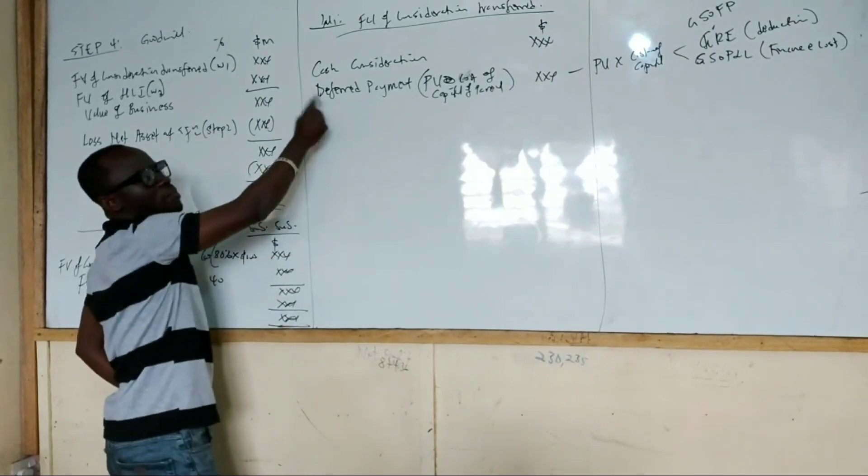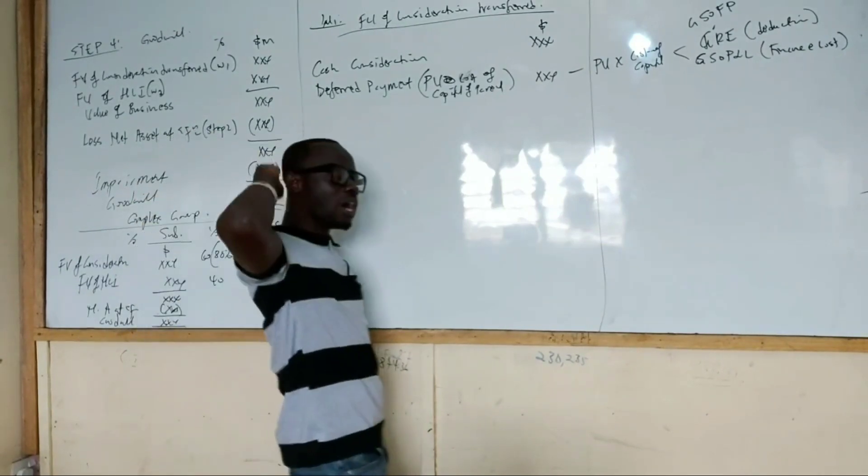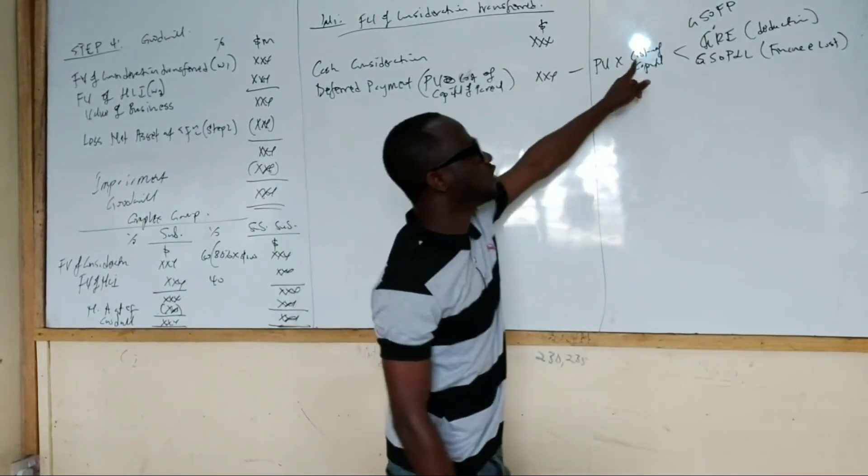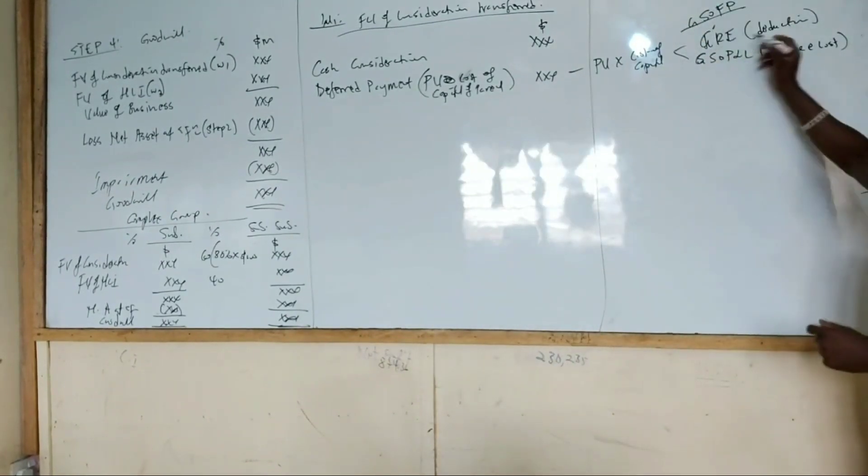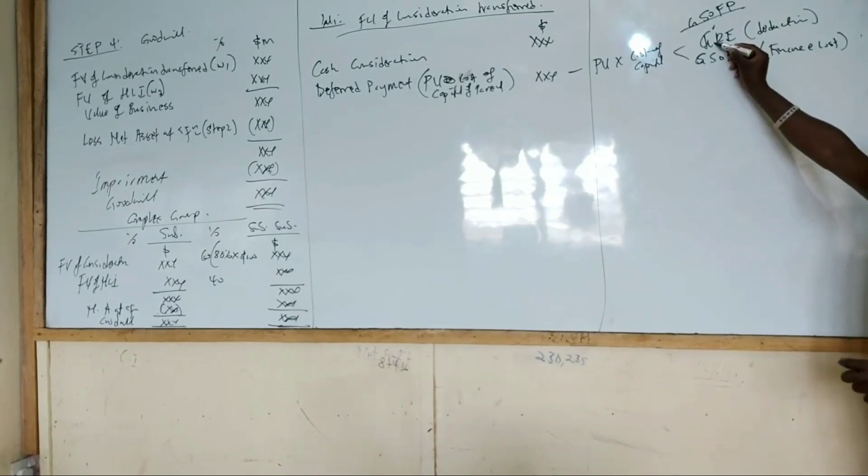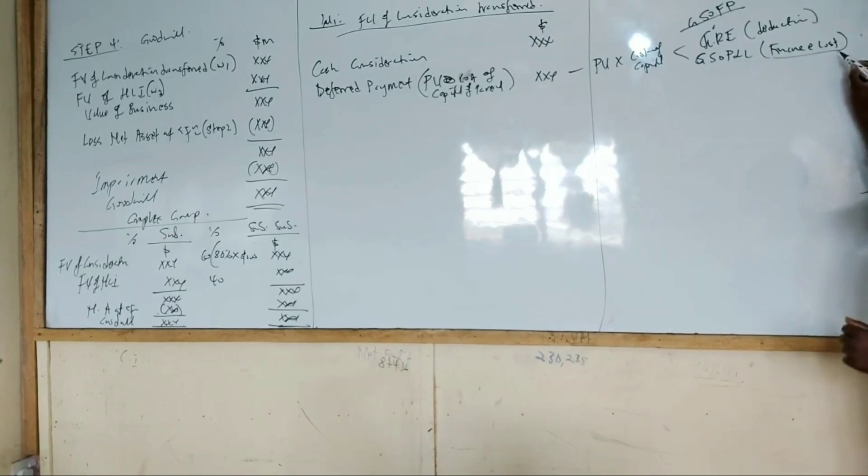But anytime there is deferred payment, please remember that we must unwind it to calculate the finance cost. That finance cost, if we are preparing group statements of financial position, we will deduct it from group retained earnings. But if we are preparing group statements of profit or loss, it will go to finance cost.